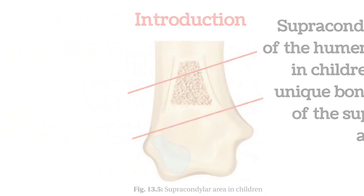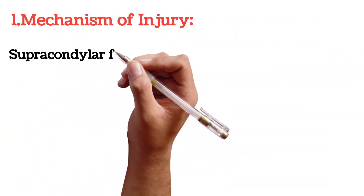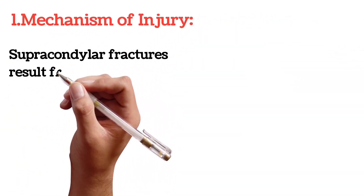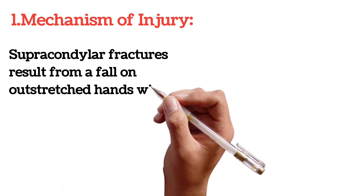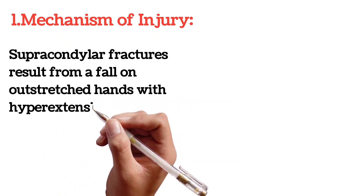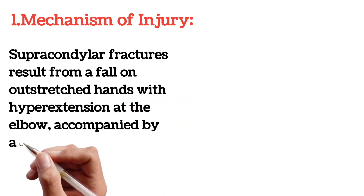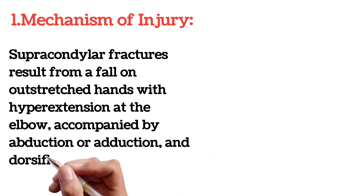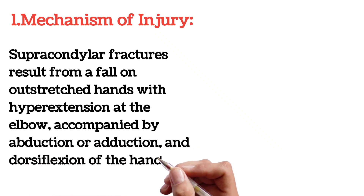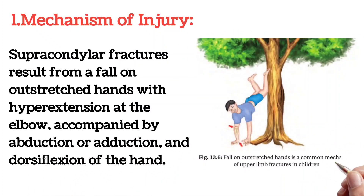Mechanism of injury: Supracondylar fractures result from a fall on outstretched hands with hyperextension at the elbow, accompanied by abduction or adduction and dorsiflexion of the hand.